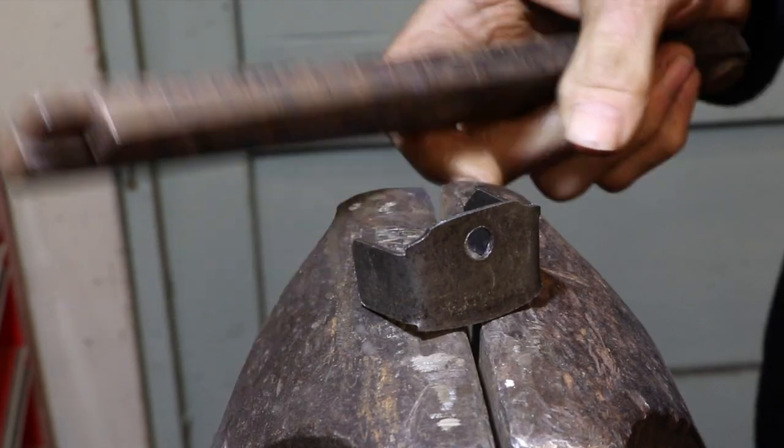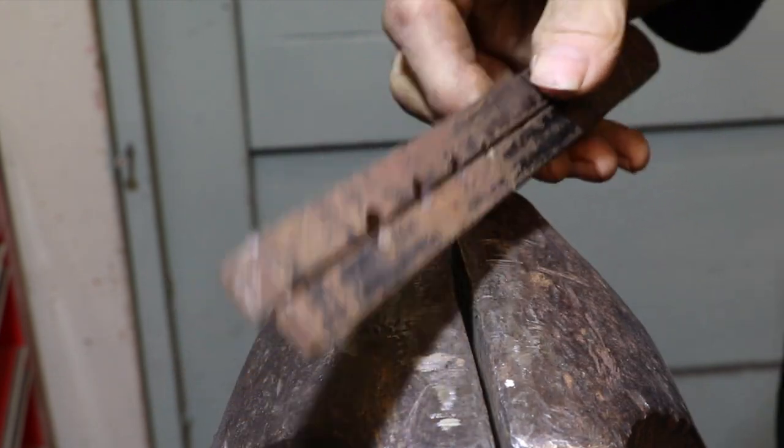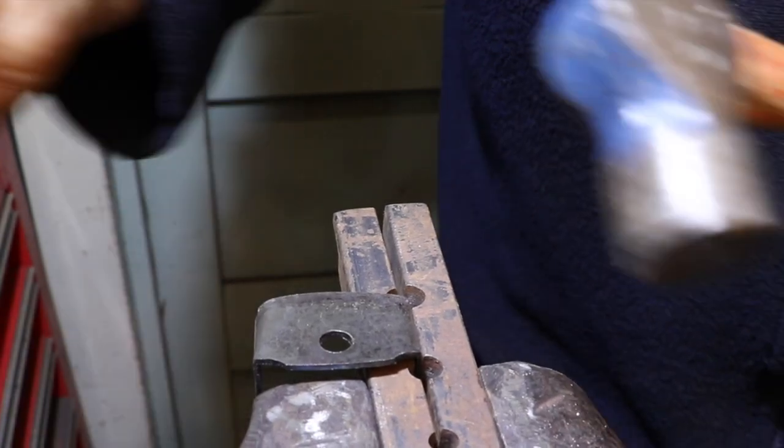To refine this simple bend into a square corner, I'm going to need to clamp the cover plate into a jig that's going to sit outside of the vise jaws.